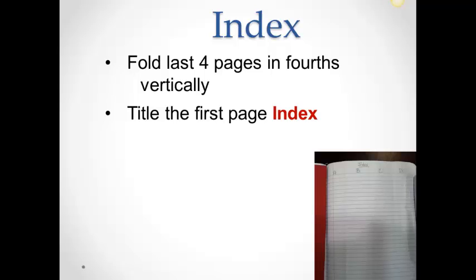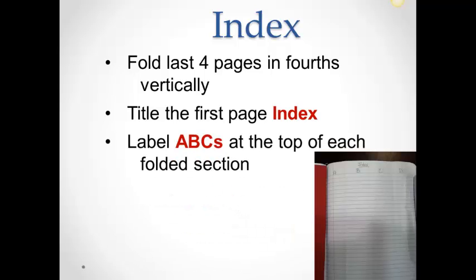The index will be created in the back of the journal and is a useful tool when students need to find a term or concept which they previously studied. The index can be added to each time a new term or concept is introduced. Under the ABCs, the term or concept and its corresponding page number are included. For example, functions and its page number are to be listed under F or ratio and its page number are listed under R.